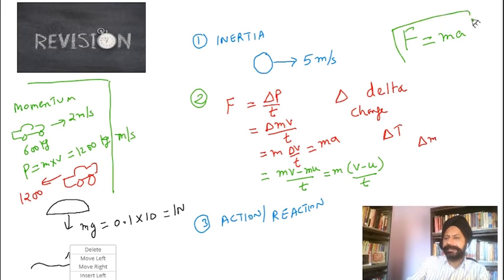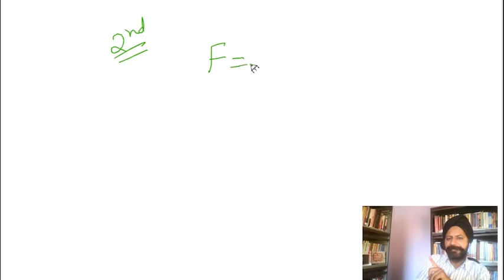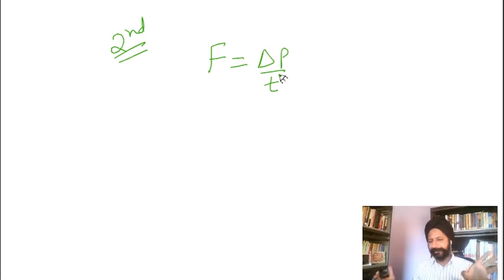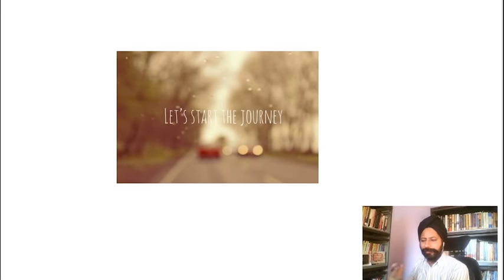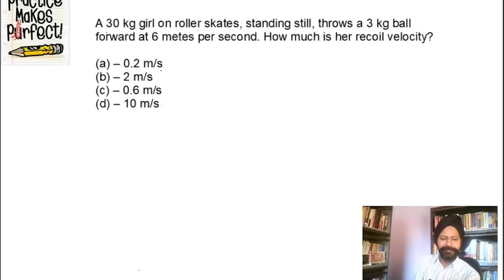To summarize the second law: it's the most useful law. First form: F equals delta p over t — that's what Newton is telling you. This can also be written as F equals ma, which you'll use most of the time. Now let's jump right into the questions. We are going to do a lot of questions today. Let's start with the very first numerical. Take your time — pen and paper are a must.